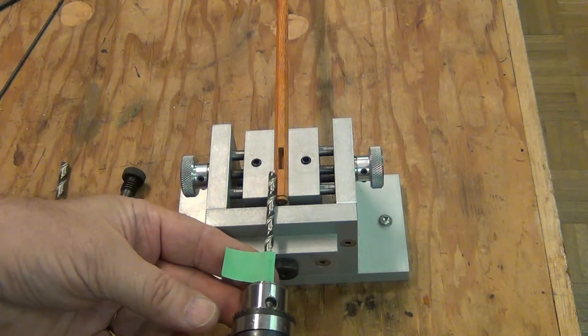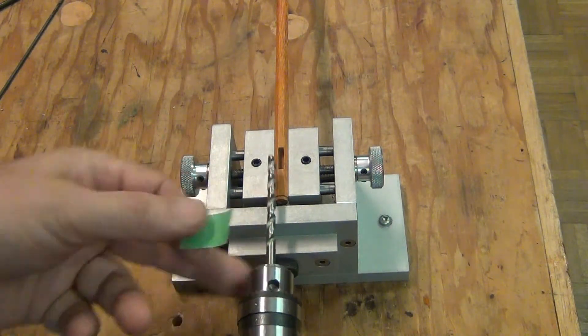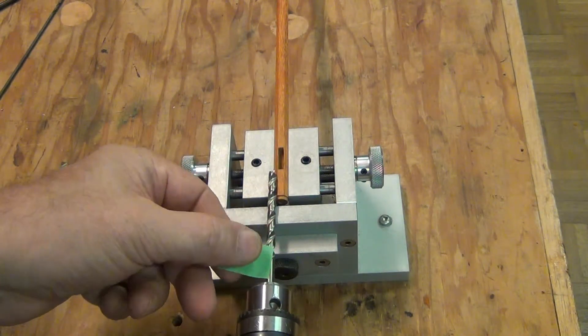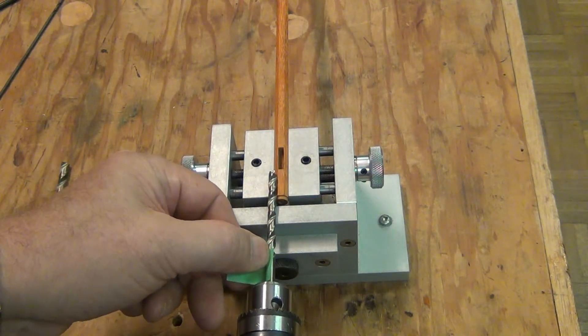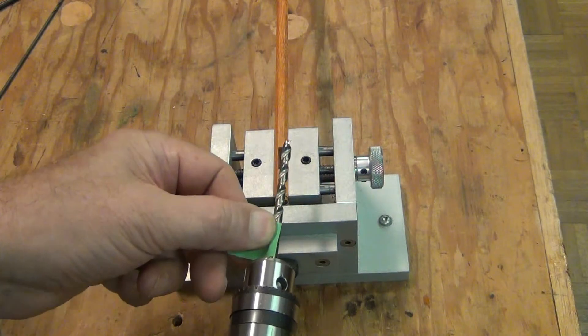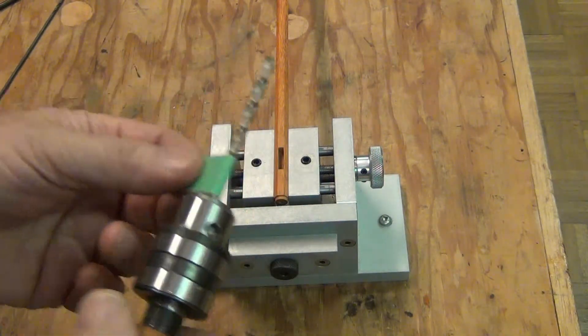To determine the position of the drill stop, turn the bow over, exposing the mortise between the jaws. The stop can be positioned by eye, or a micrometer can be used to measure that length.